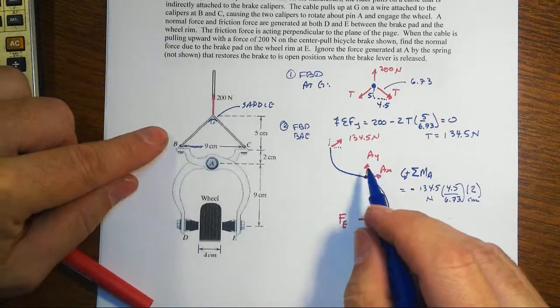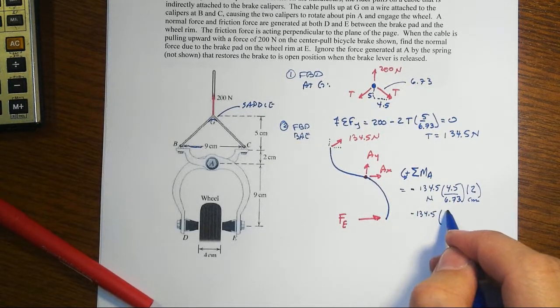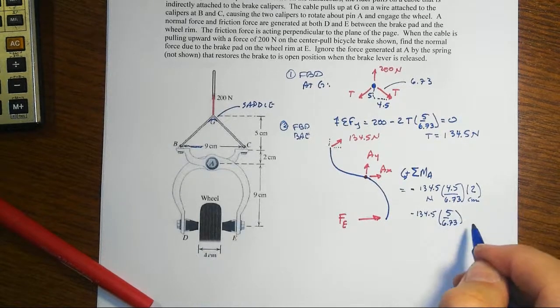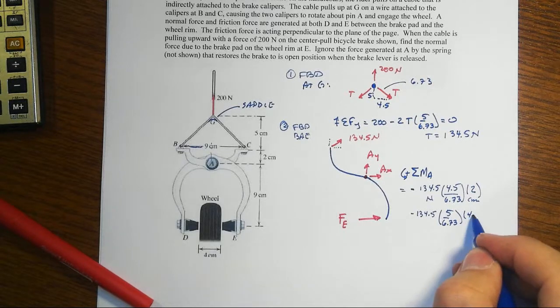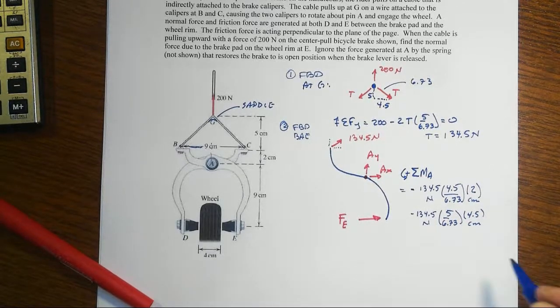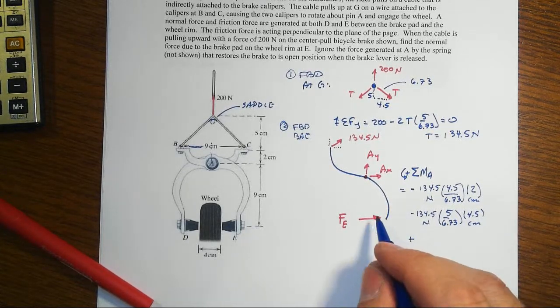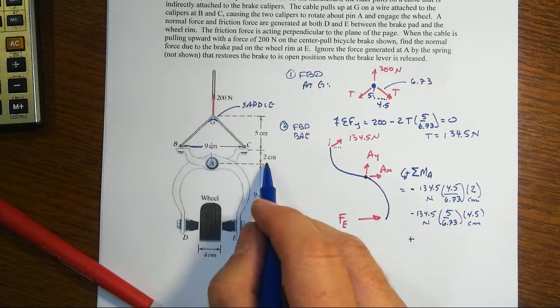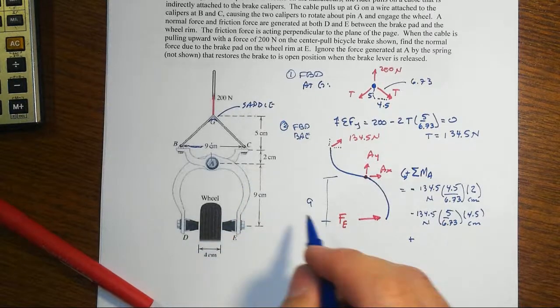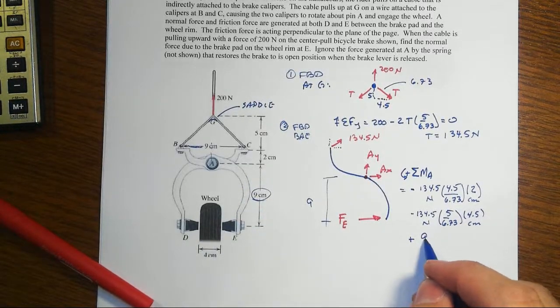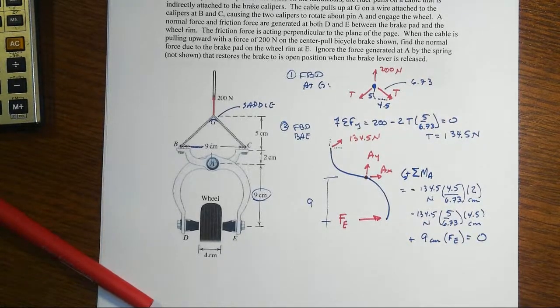Then let's get the Y component, so that's going to be also minus 134.5 times now 5 over 6.73 times then its distance over, which is going to be our 4 and a half centimeters. And then that has to be equilibrated by the force that we want in that moment arm, straight down. That's going to be, that distance right there is the 9 centimeters that we see right here. So 9 centimeters times Fe, and that will be set equal to zero.